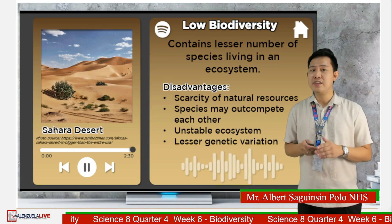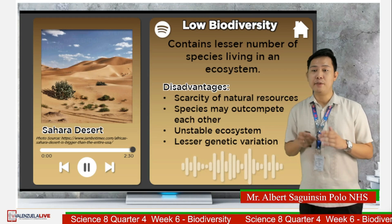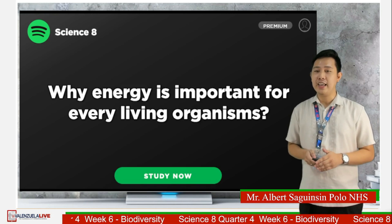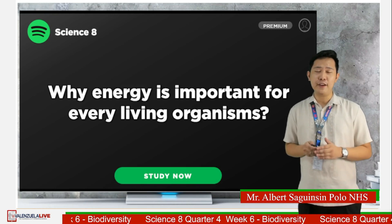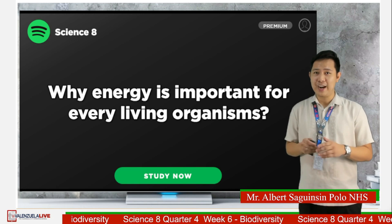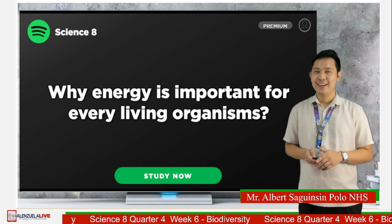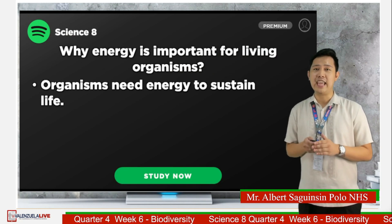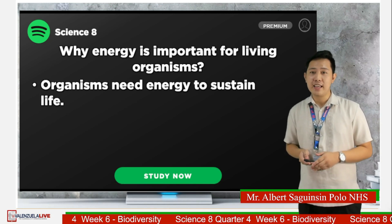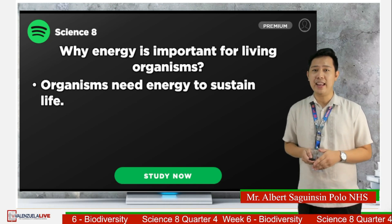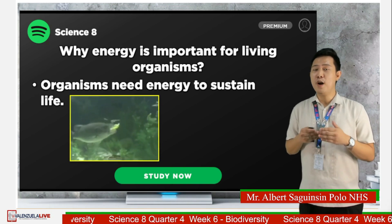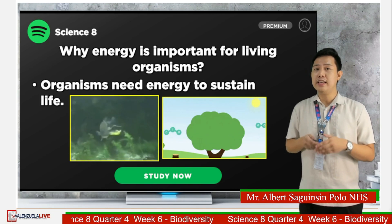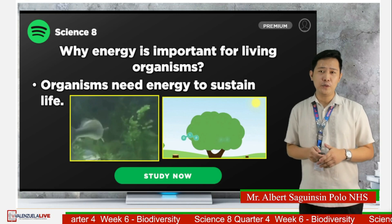For example, plants serve as producers. They provide food as a source of energy for other organisms. But why is energy important for every living organism? Comment your answers. Because all organisms need energy to sustain life. That is why organisms and their environment are interdependent. A fish could not survive without smaller fishes and algae to eat. A plant could not grow without animals giving off carbon dioxide needed for photosynthesis.